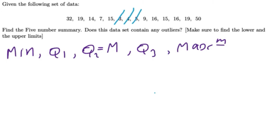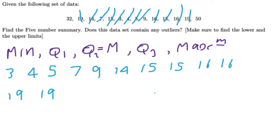The smallest number is 3, then 4, 5, 7, 9, 14, 15, 15, 16, 16, 19, 19, 32, and 50. First, find the number of data. How many data do we have? We have 14 data, so sample size n equals 14. Therefore, find the location of median.